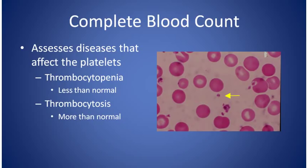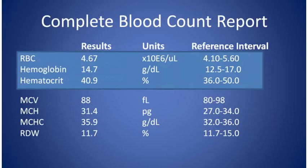When there are not enough platelets, called thrombocytopenia, a person can be at risk for bleeding. In thrombocytosis there are more than the normal amount of platelets, and a person can be at risk for blood clots such as deep venous thrombosis or pulmonary embolus.